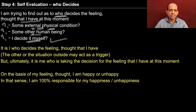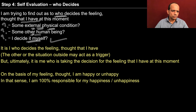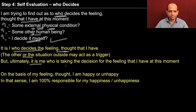Are you able to see this? Try to look into your imagination. Try to see what you have been thinking about in the past one day, and then try to see that whenever you felt uncomfortable, what was your feeling, and whom you were finding responsible — some other person, some other physical condition, or yourself. The more you explore this, we come to see that it is I who decides the feeling and the thought that I have. The other or the situation outside may act as a trigger, but ultimately it is me who is taking the decision for the feeling that I have at this moment.